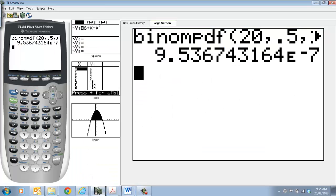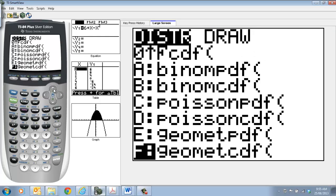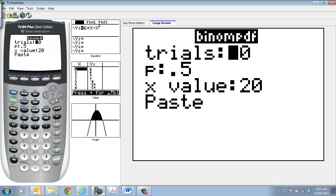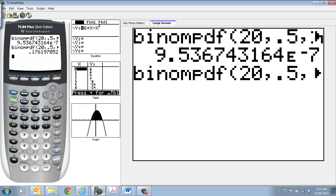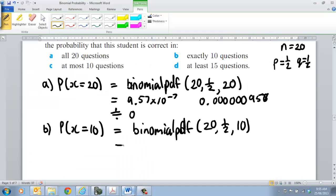Now again with the calculator, you could go second function, but I'll go through the whole process again so you can follow. Going up to your binomial PDF, it's 20, 0.5, and we're going to make that 10 now. Going in there, that's 0.1762, so 17.62% chance.